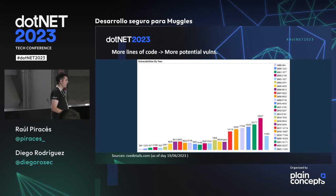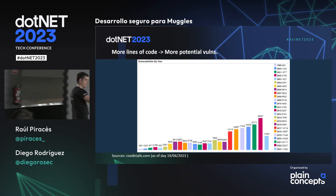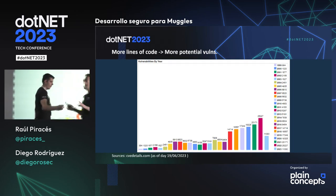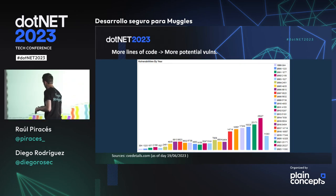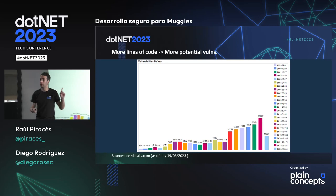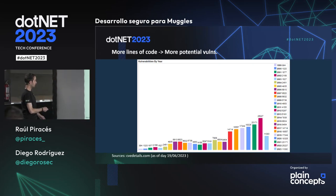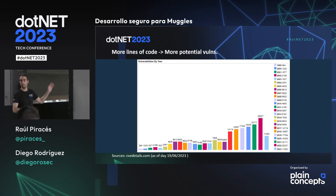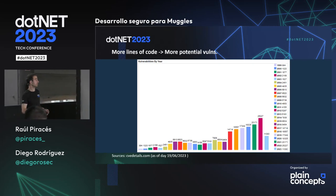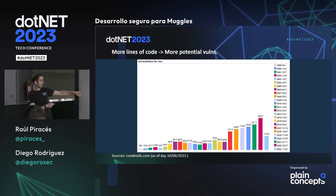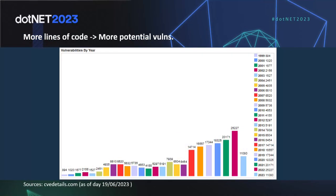Como podíais ver en la charla de Luis, cada barra en este gráfico representa un año desde 1999 de CVEs reportados. La última barra, que es 2023, está en 14.000 vulnerabilidades para el presente año, y sigue empeorando, ya veis la tendencia de los últimos años.